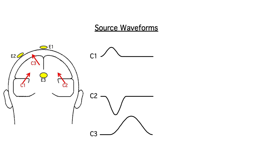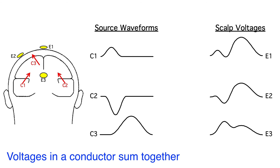To understand how the underlying components combine together in those scalp electrodes, you need to know a key fact about ERPs. Voltages simply sum together in a conductor. As a result,